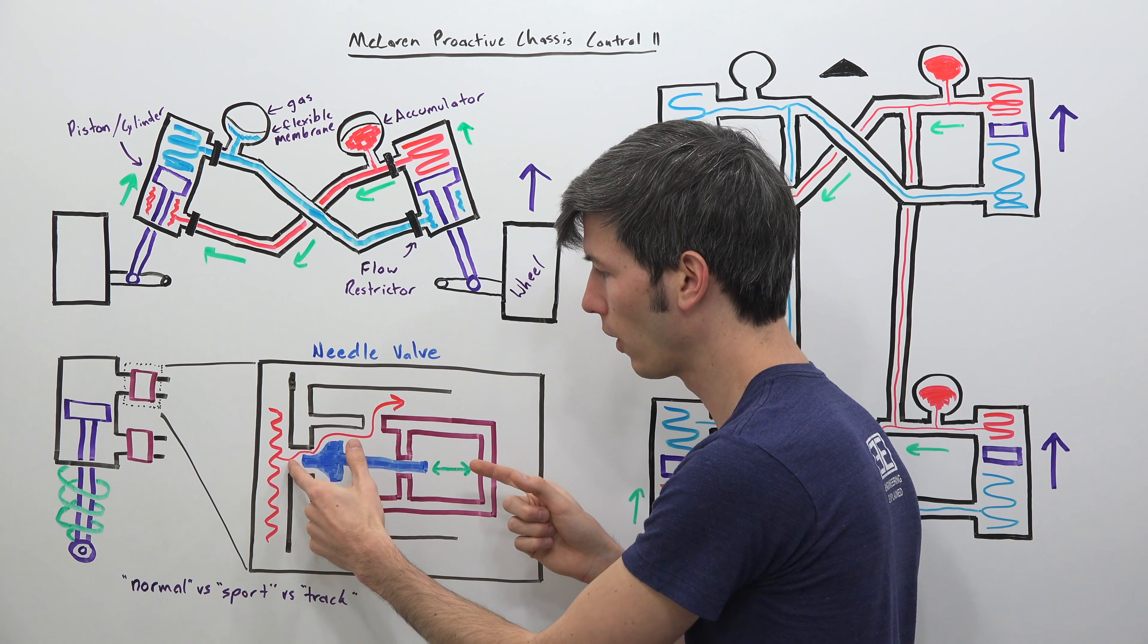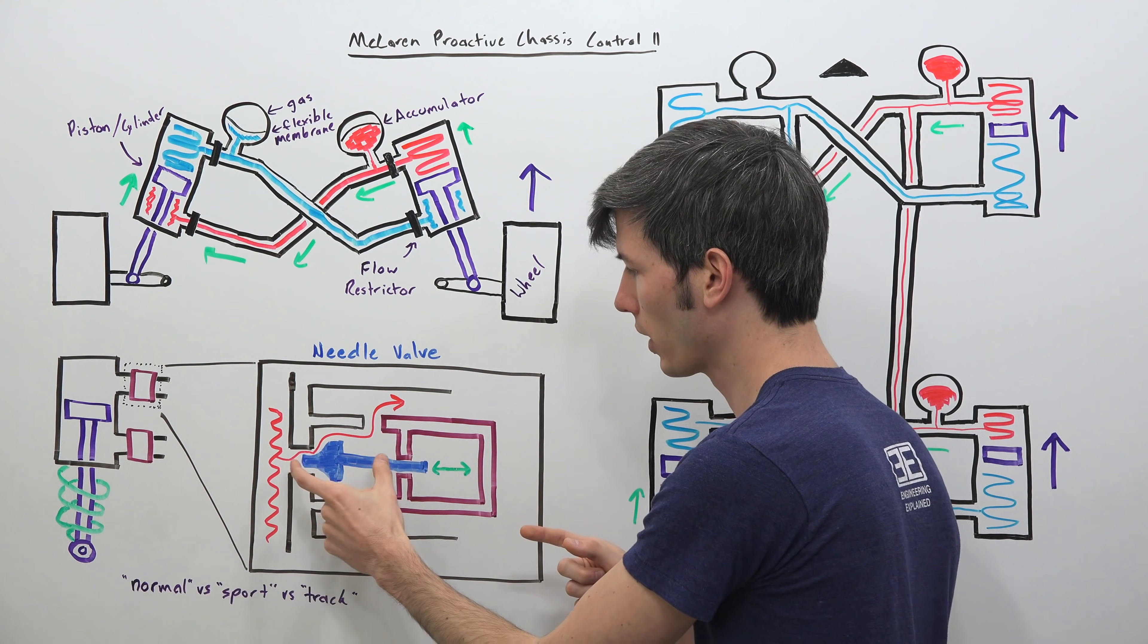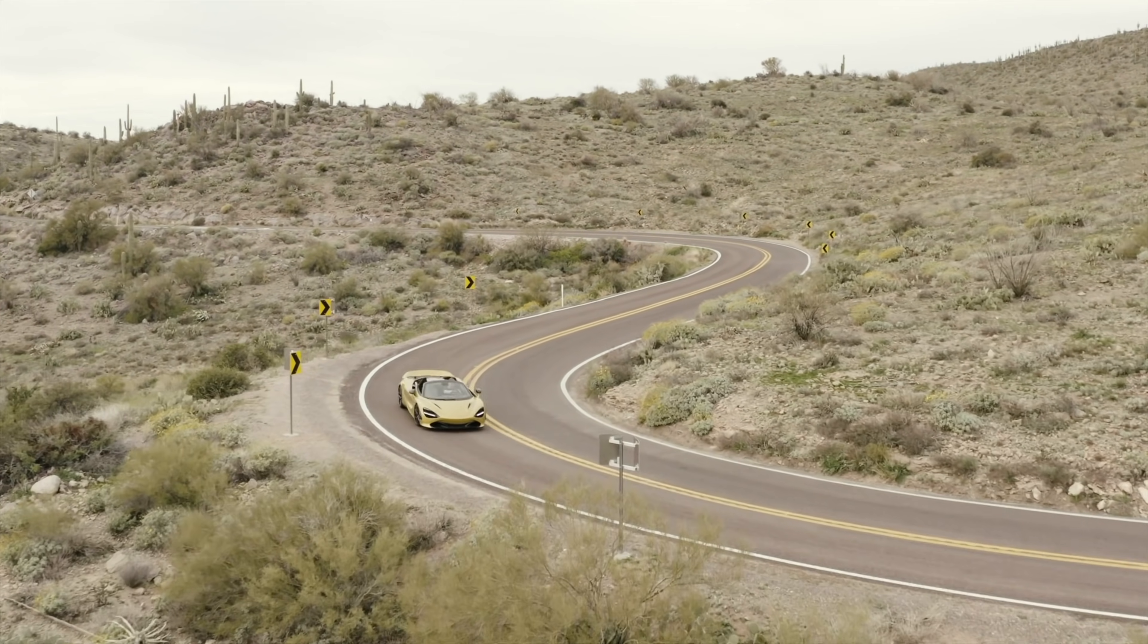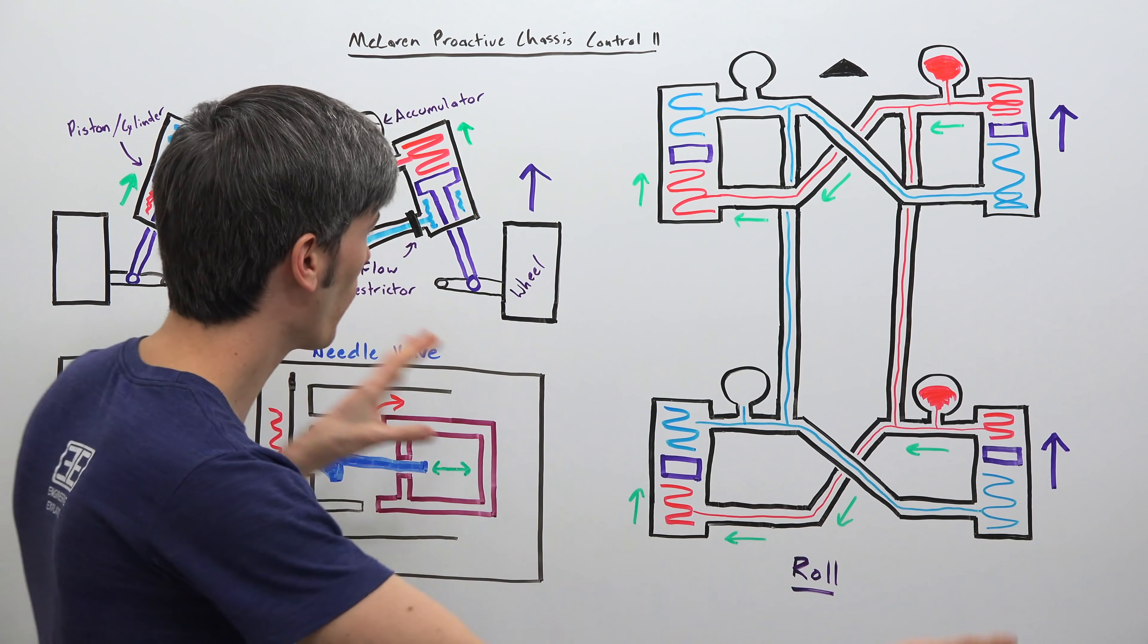So for track mode they're going to have a lot of restriction, this needle valve is going to be moved very close, and then for normal mode you're going to have not as much restriction, allow for easy fluid flow and a much more comfortable ride.